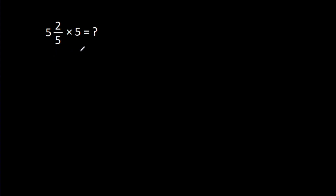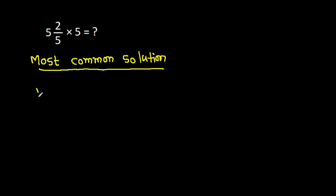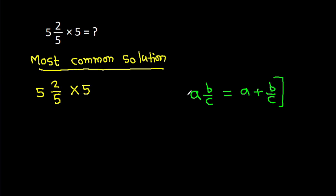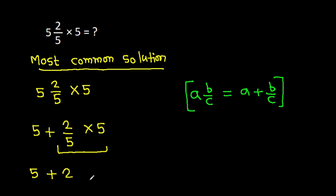The most common solution — we have 5 and 2 over 5, times 5. We know that a and b over c equals a plus b over c. So 5 and 2 over 5 times 5 becomes 5 plus 2 over 5, times 5, and that gives 5 plus 2 which is 7. But this is wrong.